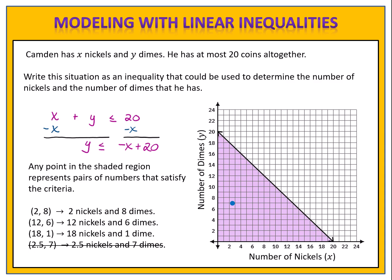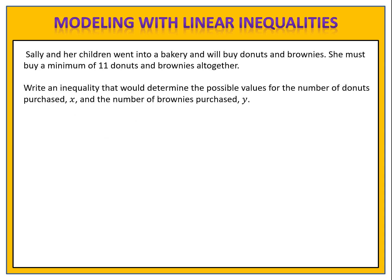We do have to use common sense when reading off the graph and choosing values that make sense in the context of our problem. The next exercise is for you to try. Sally and her children went into a bakery and will buy donuts and brownies. She must buy a minimum of 11 donuts and brownies altogether. Write an inequality that would determine the possible values for the number of donuts purchased, X, and the number of brownies purchased, Y. Remember, start by defining your variables X and Y — be specific. Then understand the scenario and write the inequality. Please pause the video here.